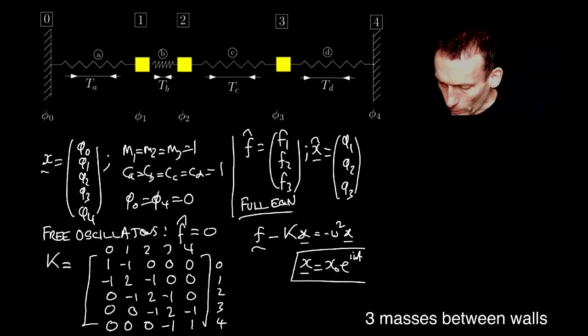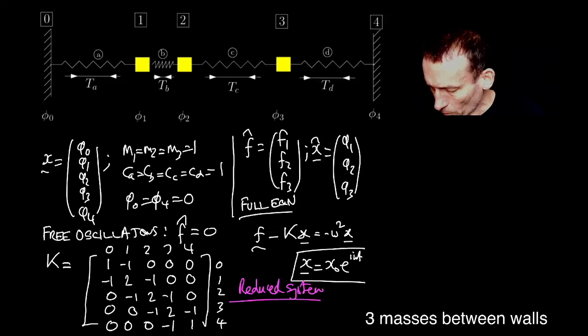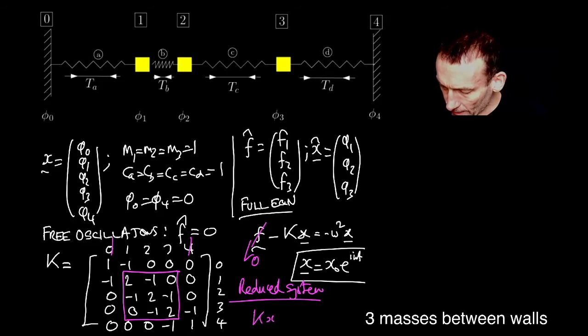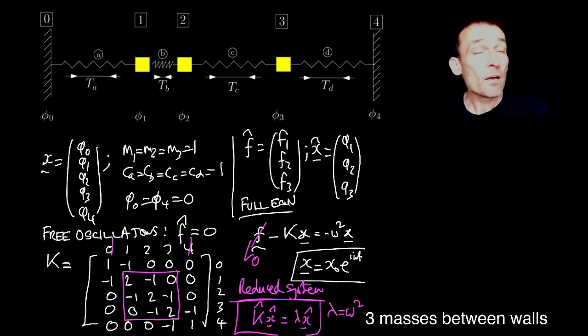Now, we want our reduced system. Okay, we want our reduced system. And remember what we do, because we've grounded these nodes, we end up just thinking about this matrix, which is K̂. So what we end up doing then is we get rid of that because it's free oscillations. And then this becomes K̂x̂ = λx̂. Okay, where λ, again, is the ω². I've skipped a couple of steps there, but they were all done in the last couple of lectures, albeit in a slightly smaller system.